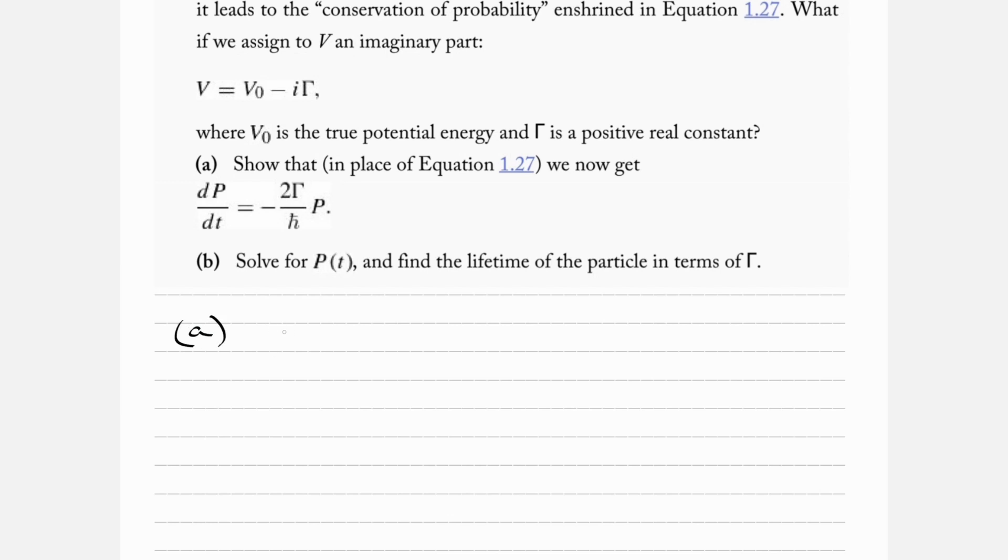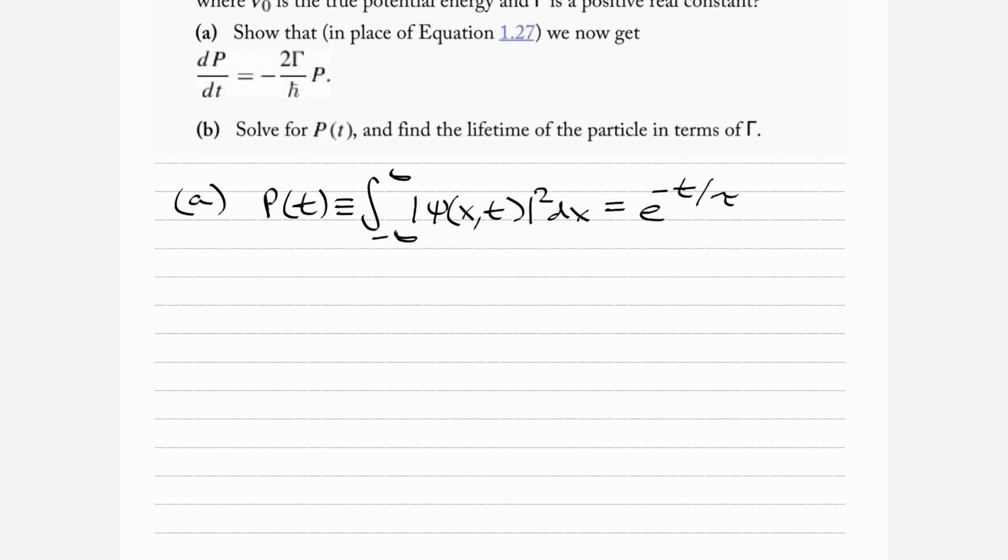The probability as a function of time is defined as the integral from minus infinity to infinity of ψ of x,t squared dx, which is equal to e to the minus t over τ. Let's start where the problem actually tells us to start - it hints us to start at equation 1.24.